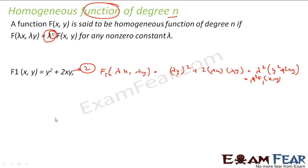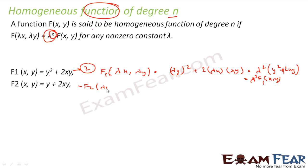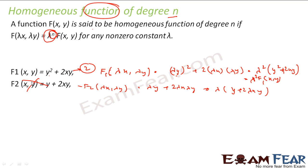Let's take another example: f₂(x, y) = y + 2xy. If I find f₂(λx, λy), this becomes λy + 2(λx)(λy) = λy + 2λ²xy. I cannot factor out a single λⁿ here, so I cannot write this as λⁿ · f(x, y). So this is not a homogeneous equation. Note the difference: the first had y², here it is just y.